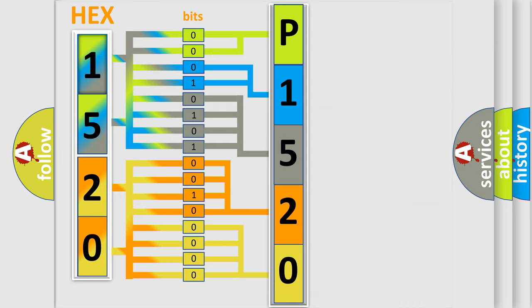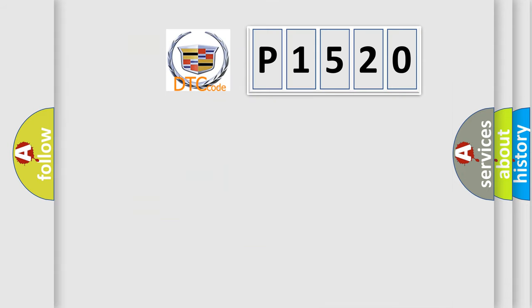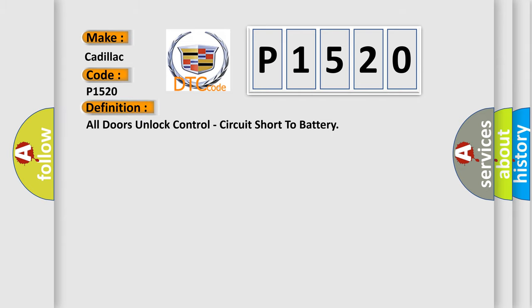We now know how the diagnostic tool translates received information into a more comprehensible format. The number itself does not make sense if we cannot assign information about what it actually expresses. So, what does the diagnostic trouble code P1520 interpret specifically for Cadillac car manufacturers?